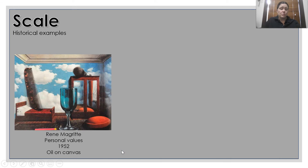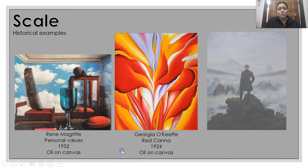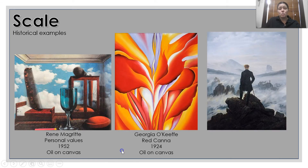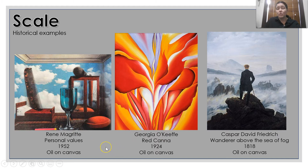Some historical examples of scale. You've got Magritte, who has a room with various objects that shouldn't be the size that they are — you shouldn't have a comb, a glass and chalice as large as they are, but this is showing scale. You've also got the example by O'Keeffe, who's showing a close-up of flowers.